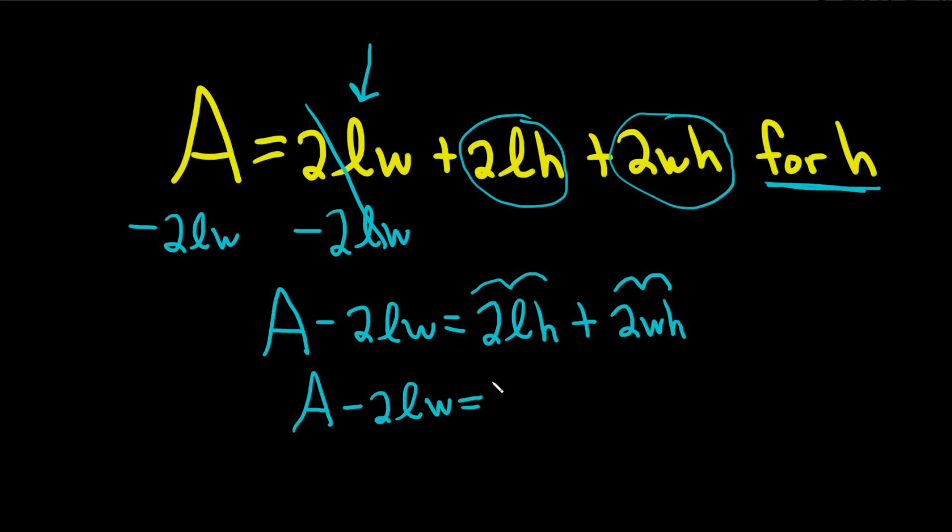Now we'll pull out that H. So, H in parentheses. To figure out what goes here, you ask yourself mentally, what's missing? You have H, you're trying to get 2LH, you're just missing the 2L. And plus? Same thing here. You have the H, you're trying to get 2WH, so 2W.